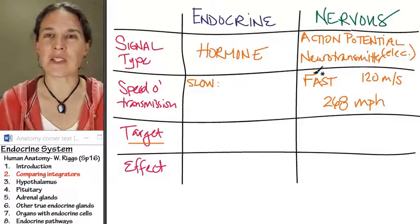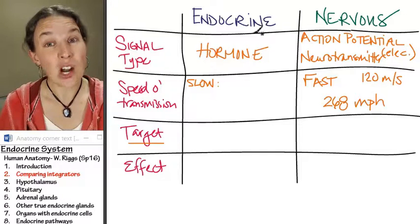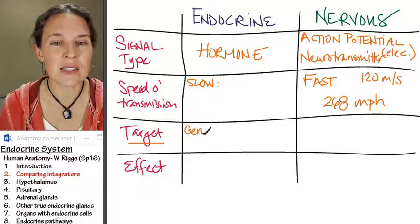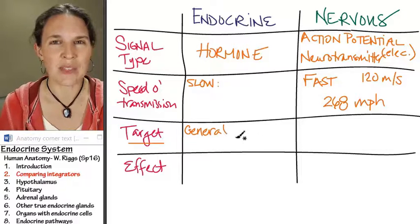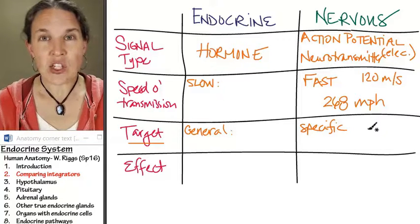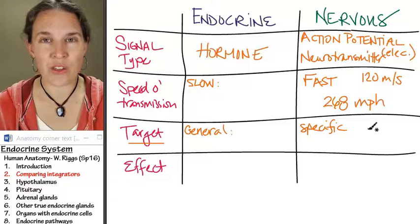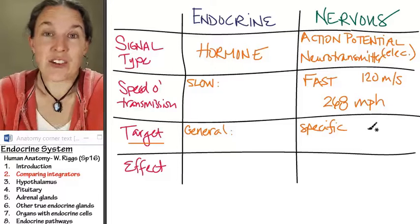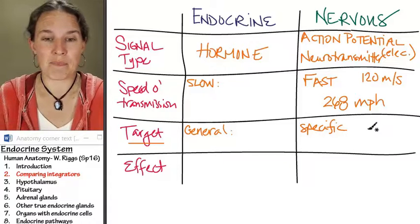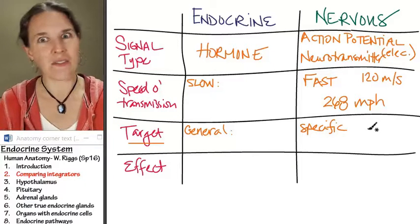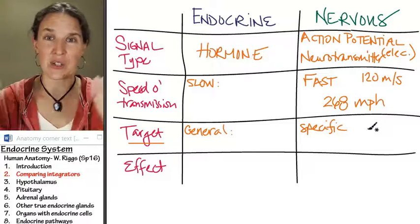The target of the endocrine system is considered general versus the very specific targeting of the nervous system. In the nervous system, the target is someone who synapses with a neuron — it could be an effector, another neuron, a gland, or even an endocrine gland. We can actually have, and often do have, the nervous system and endocrine system talking to each other.